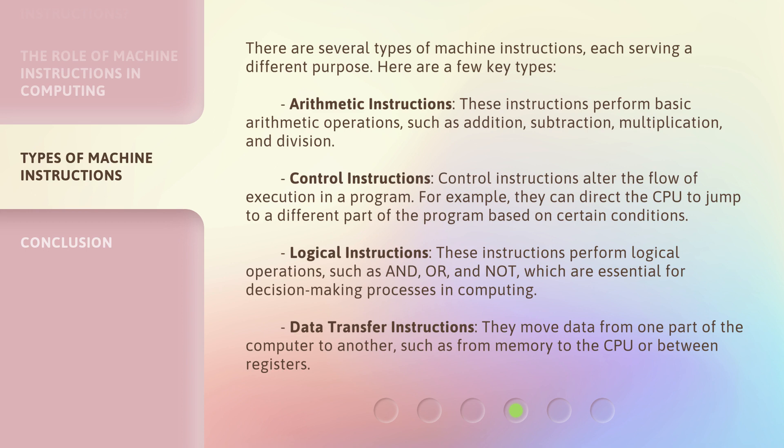Control instructions alter the flow of execution in a program. For example, they can direct the CPU to jump to a different part of the program based on certain conditions.